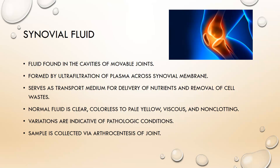Lastly, synovial fluid is the fluid found in the cavities of movable joints such as the knee, elbow, hips, and shoulder. Synovial fluid is formed by ultra-filtration of plasma across the synovial membrane. It serves as a transport medium for delivery of nutrients and removal of cell waste. Normal synovial fluid is clear, colorless to pale yellow, viscous, and non-clotting — it is very slippery. Variations are indicative of pathologic conditions, and the sample is collected via arthrocentesis of the joint, looking for white cells, crystals, and other indicators of pathology in the synovial membrane.